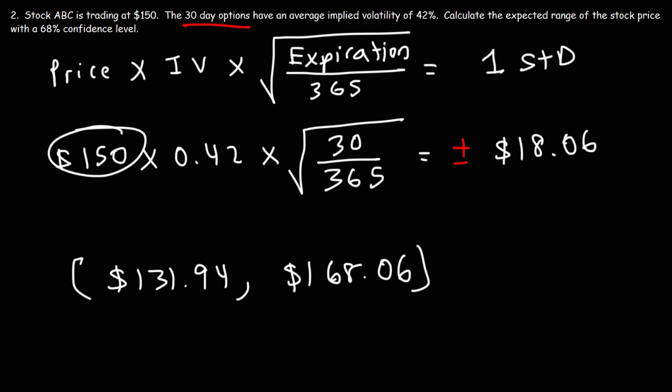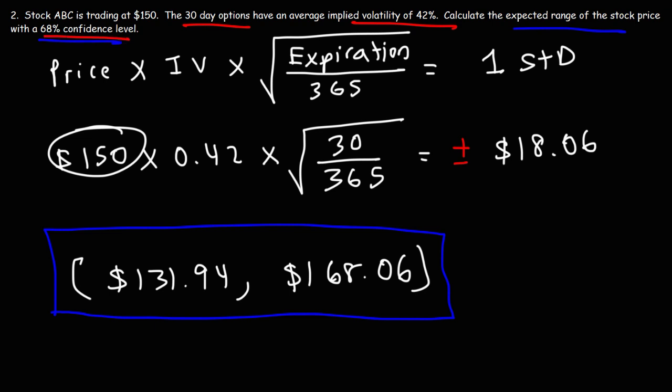So this particular stock — there is a 68% chance that stock ABC will be somewhere between $131 and $168 within 30 days. And there's a 32% chance that it's going to be outside of that range. That's how you calculate the expected range of a stock if you know the implied volatility and the confidence level.